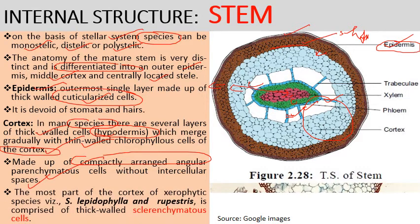In xerophytic species — such as Selaginella lepidophylla and Selaginella rupestris — the cortex is mostly made up of thick-walled sclerenchyma cells, which provide mechanical support to the stem.